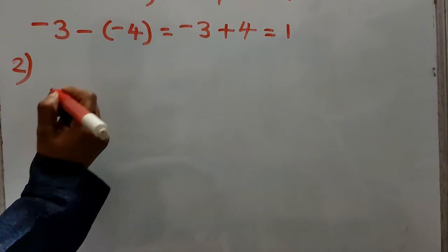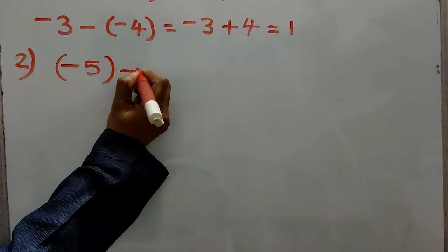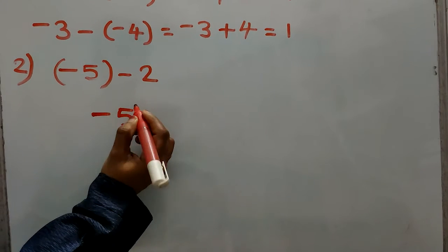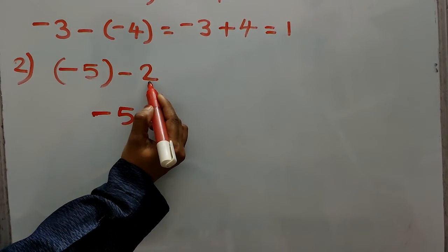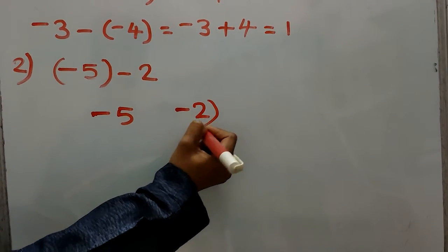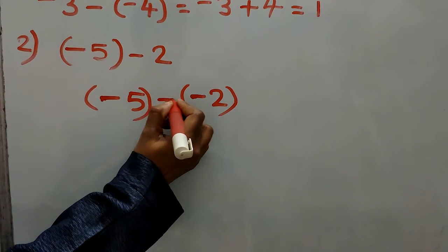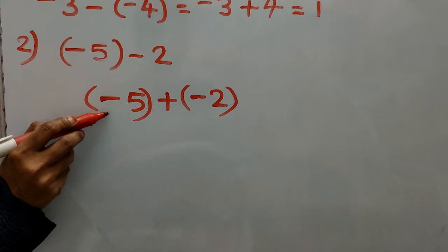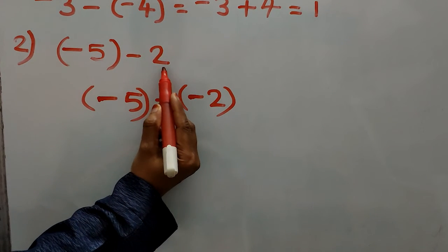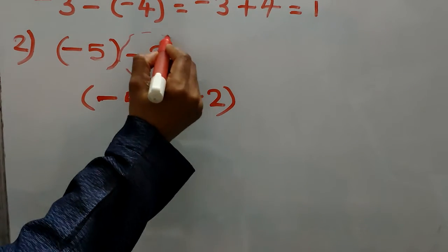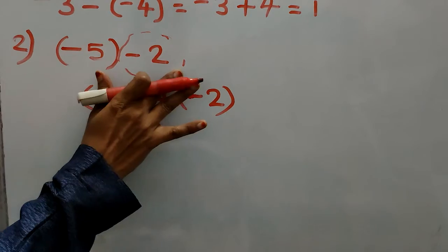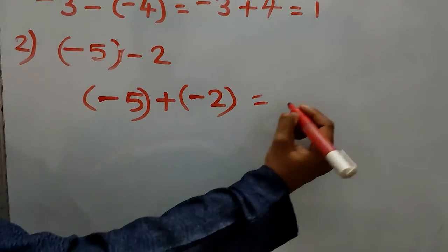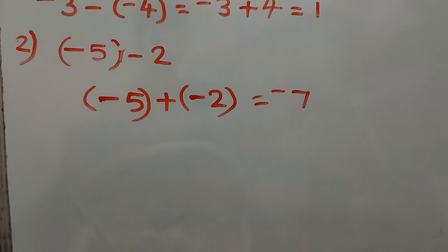The second case: if the question comes like negative 5 minus 2. Here, first number is negative 5, and we give the subtraction sign to the next number — that means the next number will become negative 2. In between, we put an addition sign. So now both are negative: add and put the negative sign. 5 plus 2 is 7, and both are negative, so answer is negative.